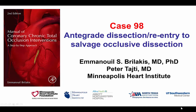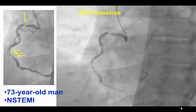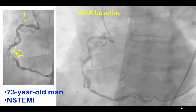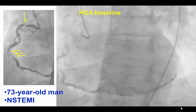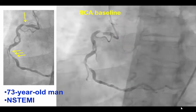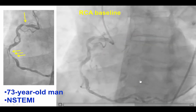This is Manos Brilakis and Peter Taiti from the Minneapolis Heart Institute, presenting case 98 for the second edition of the Manual of CTO Interventions. This is a case in which CTO techniques were used to salvage a complication of standard PCI. The patient presented with a non-STEMI or a non-cardinal infarction and was found to have diffuse disease in a tortuous right coronary artery that was the culprit.